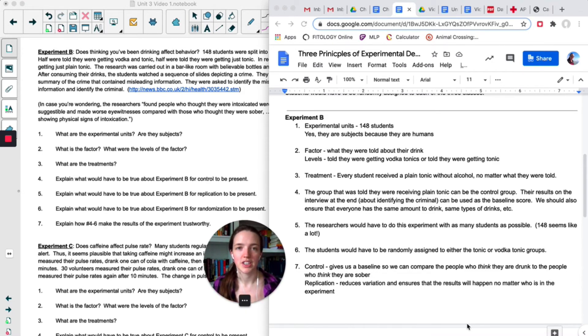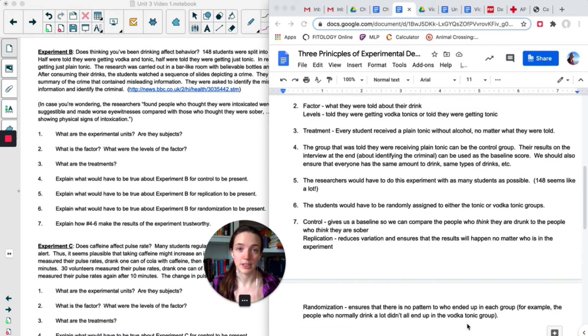Okay, for replication, the researchers would just have to do this with as many students as possible. 148 seems like a lot, especially if they're doing this all at once. That is a lot of students to be all in one place. Randomization. The students would have to be randomly assigned to either a tonic or a vodka tonic. The researchers can't just pick based on some physical feature of the person. They can't tell the first 50 they're getting alcoholic drinks and the last 50 they're not because maybe there's a difference in the people who come in first versus the people who come in last. It has to be randomly assigned.